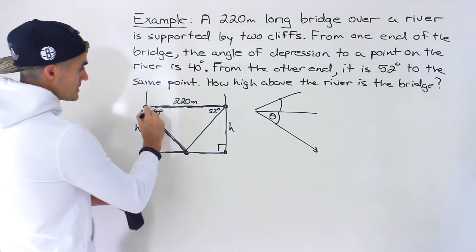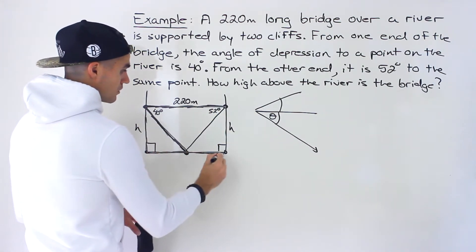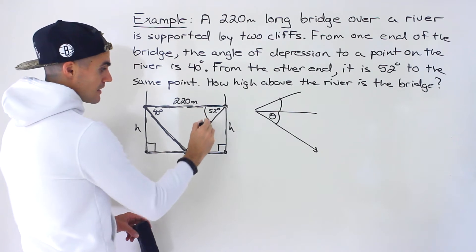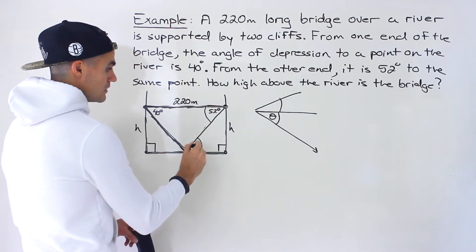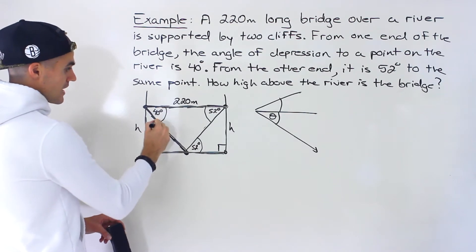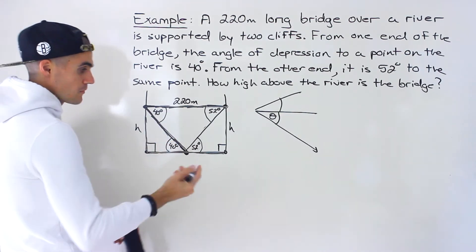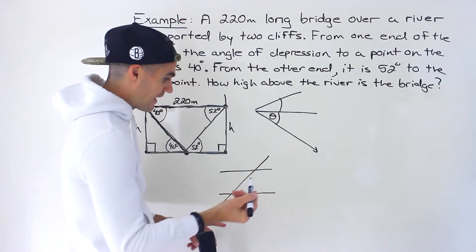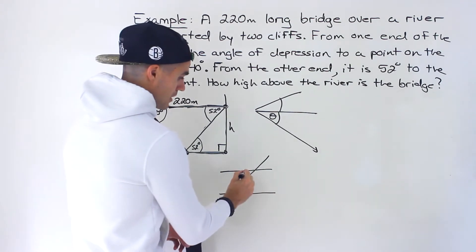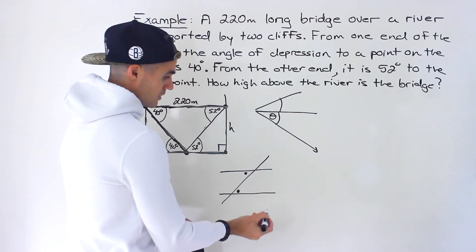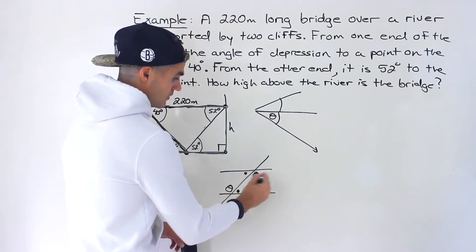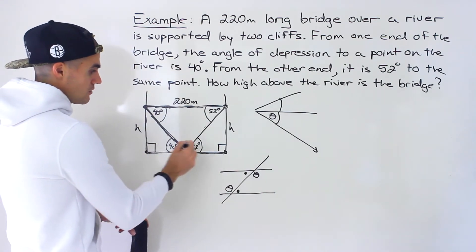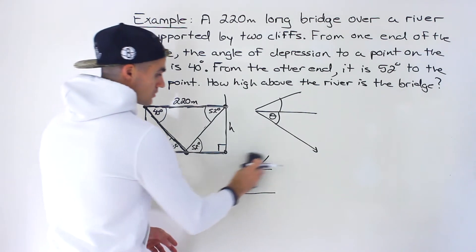Because the bridge and the river are parallel, and we have a line going through them, we can use the Z-pattern. We know that this angle and this angle are going to be the same — and same thing here, this angle and this angle are going to be the same. With two parallel lines and a transversal, the alternate interior angles are equal. So we applied that rule to get the angles in our two right triangles.